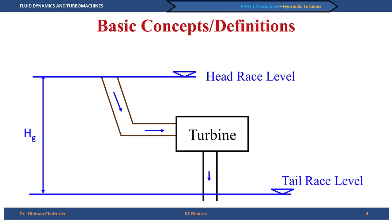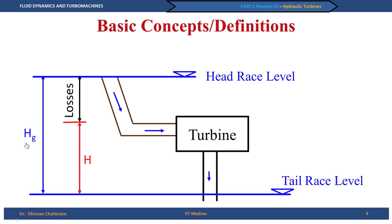However, whenever there is flow, there will be losses associated with it — approach losses, exit losses — and hence what is available to the turbine for power extraction is not H_G. What is available is the energy at the fluid before it enters the turbine minus the energy as it leaves. This is given by H_net, or H, which we call the net head, as opposed to H_G the gross head.